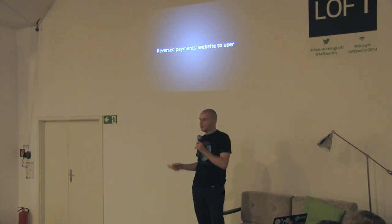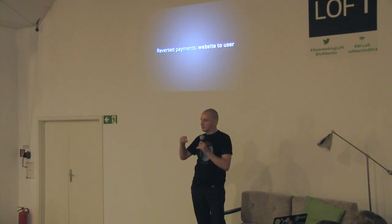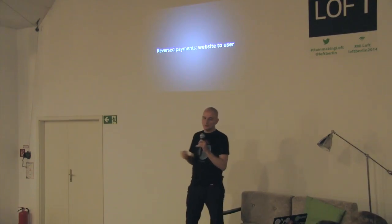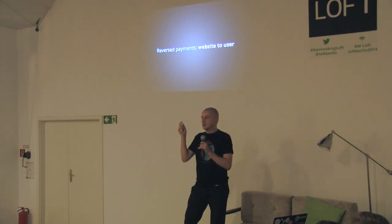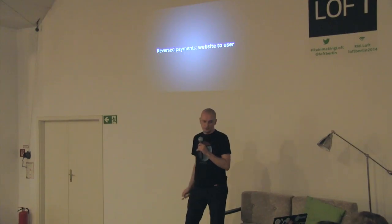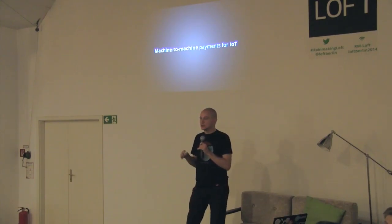A very interesting part: because it is a fully functional Bitcoin wallet, it's relatively easy to enable reverse payments — meaning the website can contribute some coins for meaningful interaction. For example, you fill out a survey and the website credits you 50 cents, or you translate a line of text, or rate an image. These things can be contributed directly — it's a two-way system, which is very powerful. The two-way system is also interesting for the Internet of Things — machine-to-machine payments — where there's no real solution, and we are conceptually working on a solution in that space.